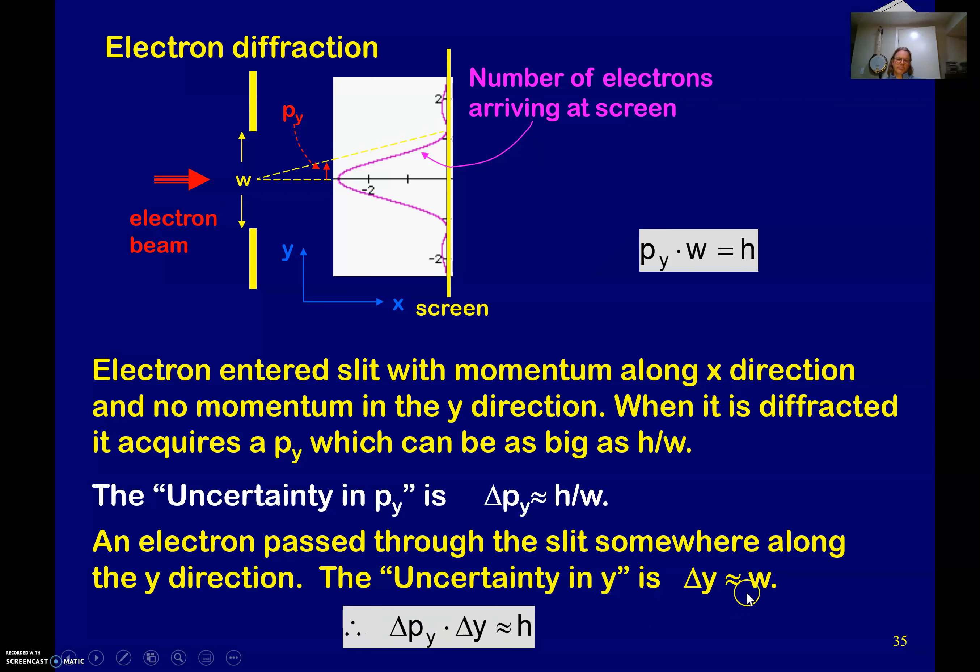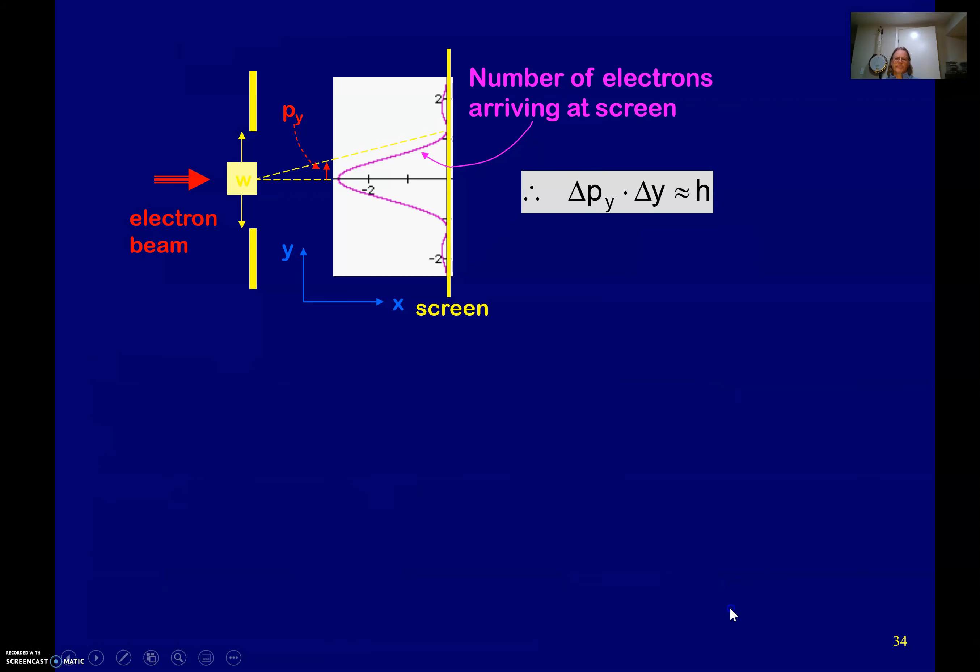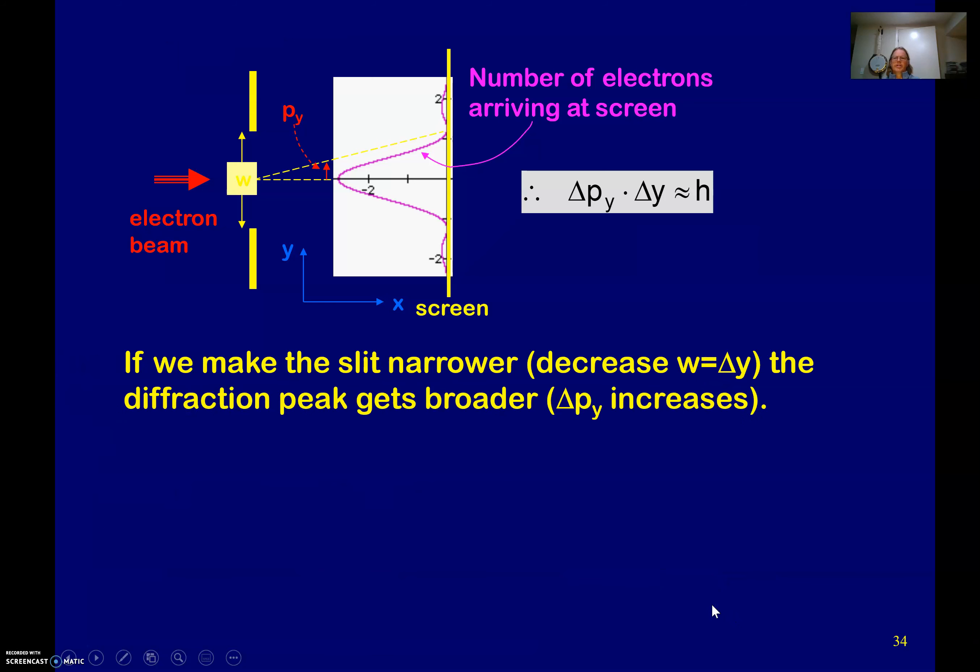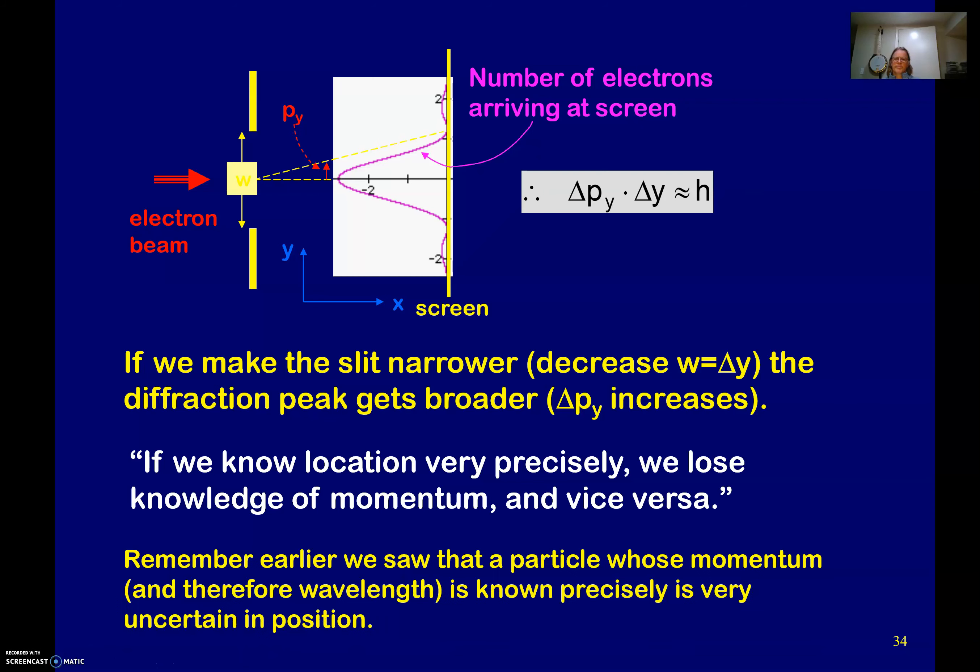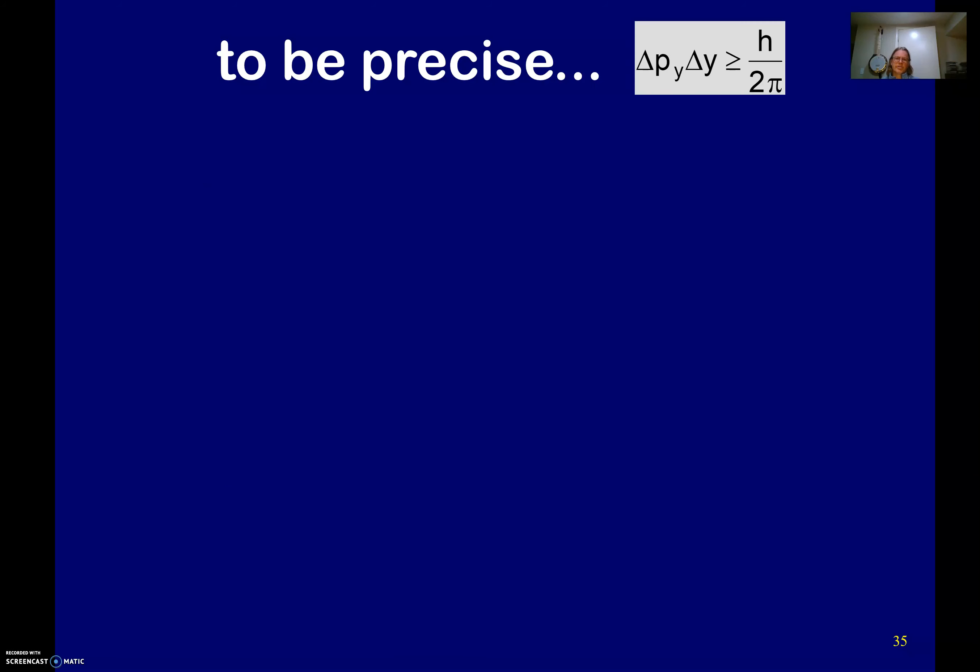All righty. So if we make this a little narrower, the diffraction peaks get broader. Okay. So the change in momentum of Y increases. So if we know the location very precisely, we lose knowledge of that momentum, and vice versa. All right. Remember earlier we saw the particle's momentum, and therefore wavelength is known precisely, is very uncertain in the position.